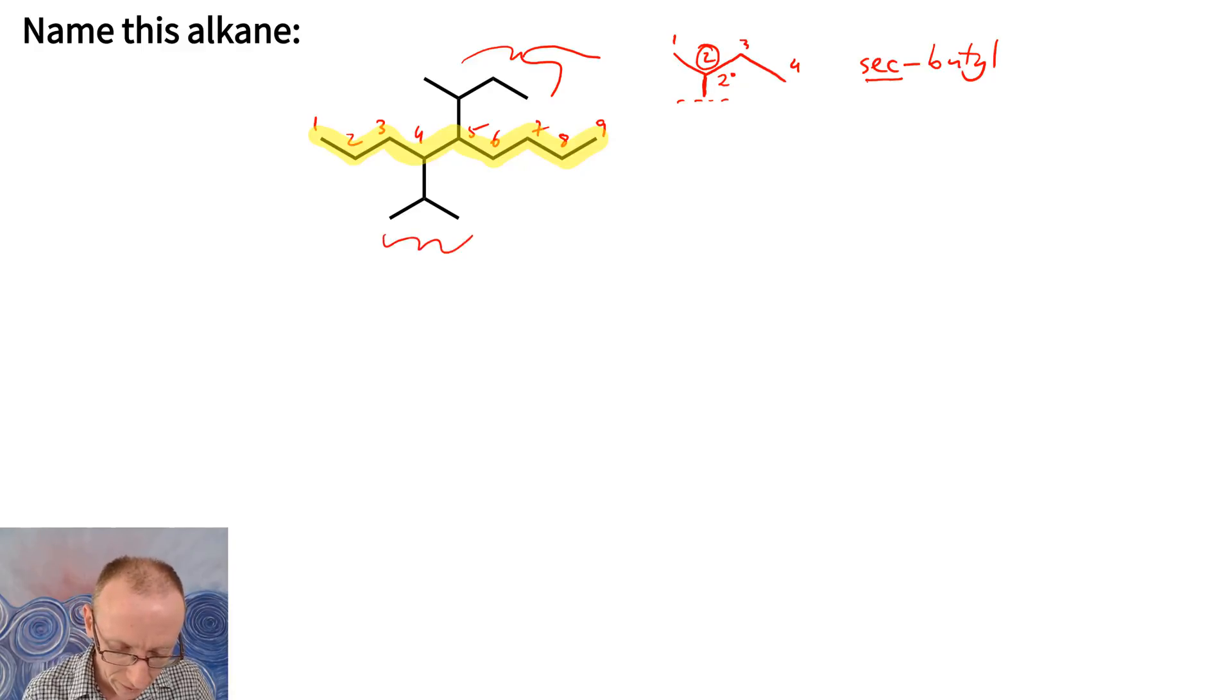If we look at this group over here, that is attached through the central carbon of a three carbon chain. So it looks like this. It's a 1, 2, 3 carbon chain. So it's a propyl substituent. And there's only two types of propyl substituents. There's either n-propyl, which is just attachments through the one position, or there's isopropyl. And isopropyl is when we're attached through the two position.